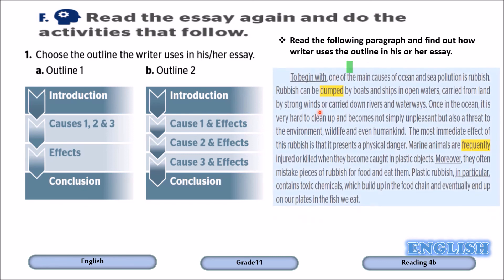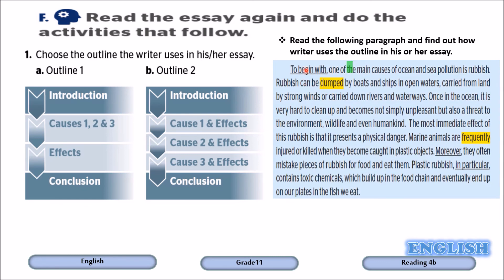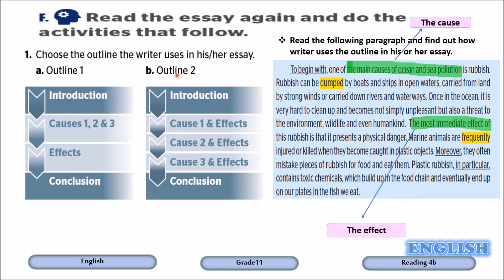Look at the first paragraph — to begin with, one of the main causes. Here we can find the causes. In the same paragraph, the writer mentions the cause and its effects — this is the cause, and here is the most immediate effect. So the cause and the effects appear in the same paragraph. Therefore, the writer uses outline two.